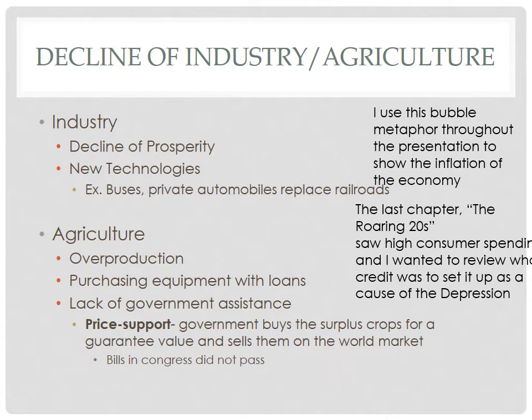Consumers were buying things on credit, and so were farmers for their equipment. Because of these new machines, they were making too many crops they couldn't sell. They were looking for a price support — that's when the government, since there are all these surplus crops, promises to buy the farmers' crops at a certain price and sell them later on the world market. Unfortunately, price support bills in Congress did not pass. So farmers were in debt because they took out loans and bought high-yielding crop machines on credit, with an overabundance of crops and no government help.